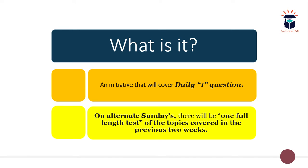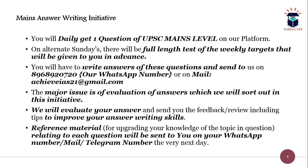The topics covered on alternate Sundays are told to you in advance — it is not that we pick up any topic randomly for the full-length test. We give you weekly targets which you have to complete, and then your full-length test is of that particular topic. Apart from that, current affairs of those two weeks are also used to frame the questions of the full-length test.